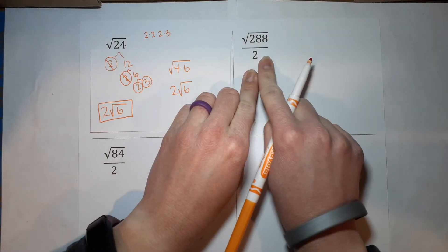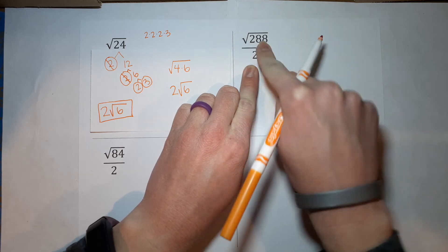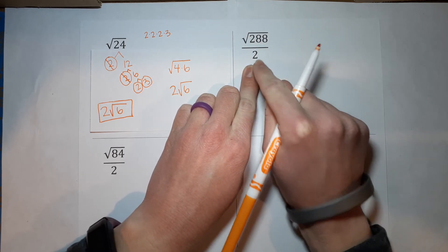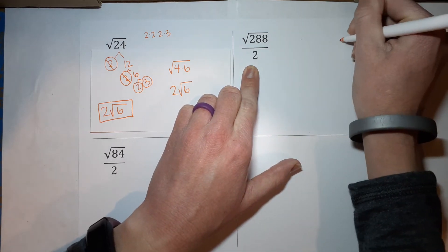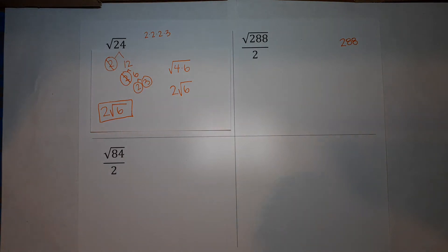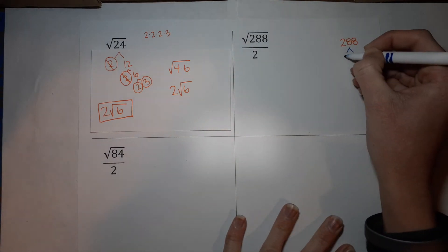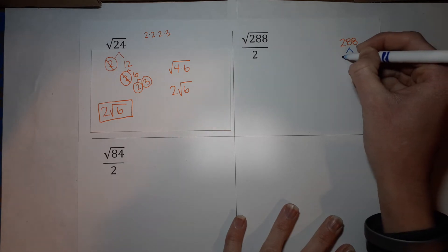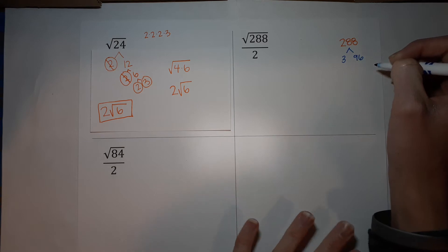Now what happens when we've got it as a fraction? Not too bad. We're first going to simplify this down and then we'll worry about the 2. So prime factorization of 288. Two numbers that multiply to 288 would be 3 and 96. So 3 times 96 gives me 288.